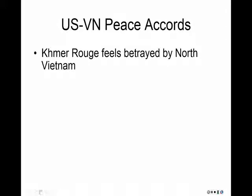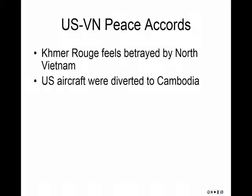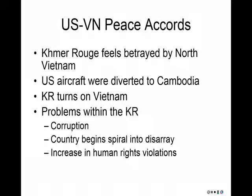When the United States and the Vietnamese enter into a peace accord, the Khmer Rouge feels betrayed by North Vietnam — left out in the cold. U.S. aircraft are diverted to Cambodia to try to get rid of Pol Pot. The Khmer Rouge turns on Vietnam, but there are also problems within the Khmer Rouge themselves — corruption, the country spiraling into disarray, and an increase in human rights violations. What makes the situation in Cambodia so different is the extreme nature of what the Khmer Rouge started to engage in regarding the country's economic viability.